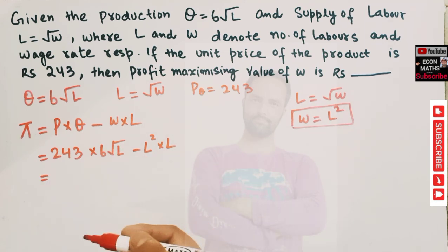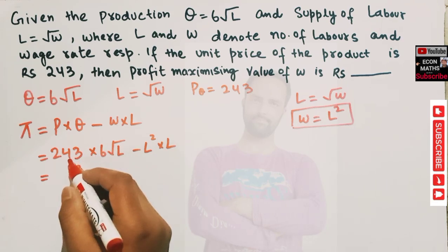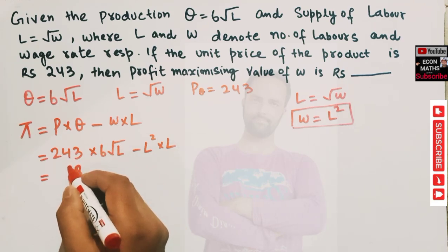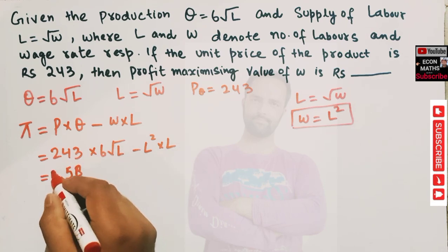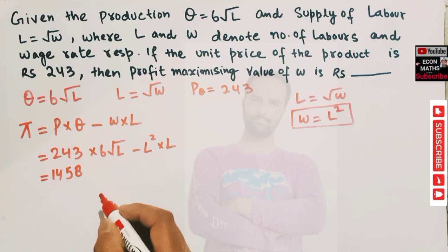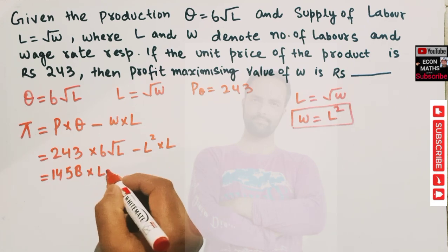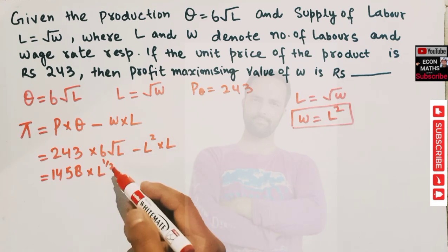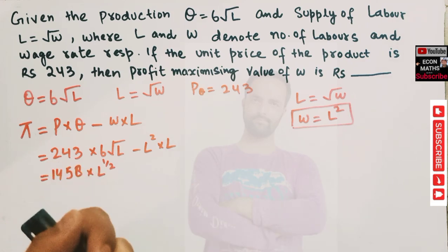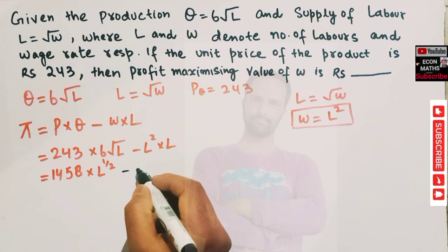The profit function simplifies to: π = 1458 × L^(1/2) − L³. We write the output term in exponent form as L to the power one-half, and total cost term as L cubed.